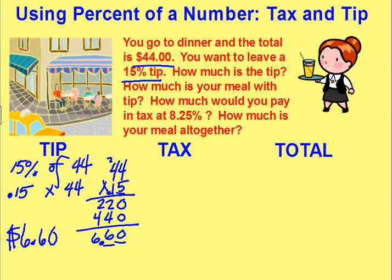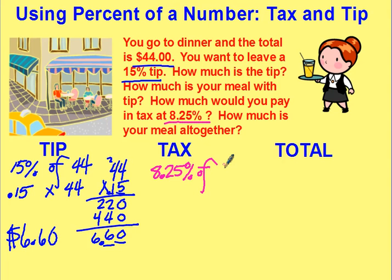Your tax would be figured at 8.25% if you live in Dallas County. So, 8.25% of — go back to your original cost of your food, because that's what you're paying the tax on — of $44. Change your percent to a decimal by moving your decimal back two places. So 8.25% becomes 0.0825. Change your 'of' to multiplication.